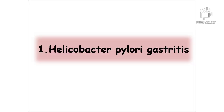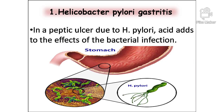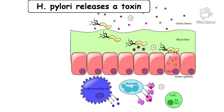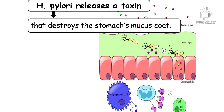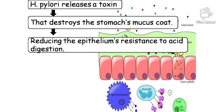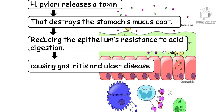Helicobacter pylori gastritis: in a peptic ulcer due to H. pylori, acid adds to the effects of the bacterial infection. H. pylori releases a toxin that destroys the stomach's mucous coat, reducing the epithelium's resistance to acid digestion, and causing gastritis and ulcer disease.